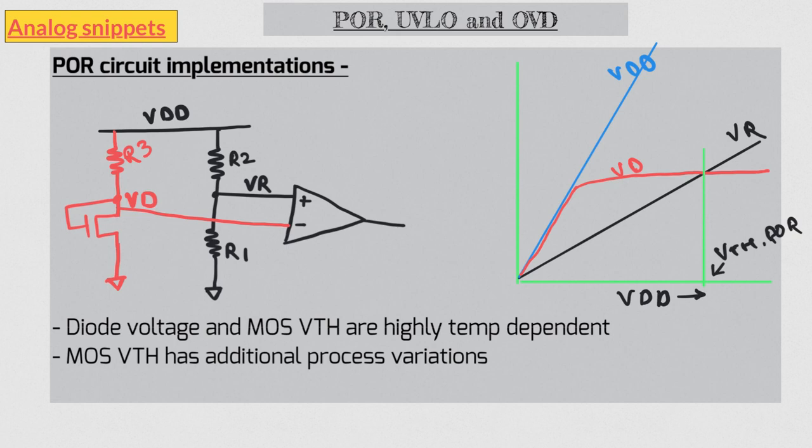Including everything, you can easily expect plus minus 20 percent variation to plus minus 40 percent variation in POR threshold. Fortunately, minimum supply voltage of a band gap also reduces with the temperature, so some of the variation cancels out.